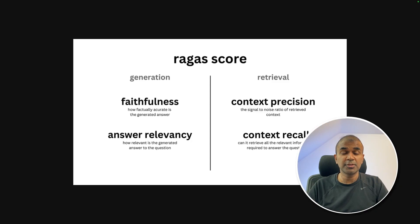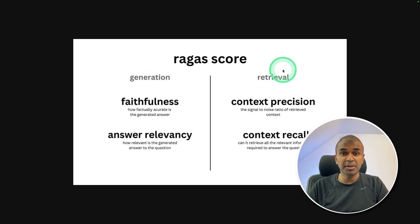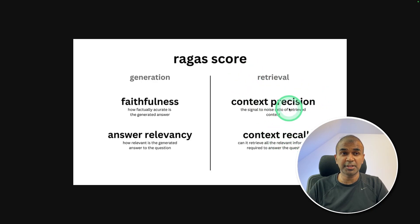RAGAs mainly focuses on two main things. One is generation — that is when a large language model generates a response. Second is retrieval — that's when the relevant information is searched from the database and provided as context to the large language model.